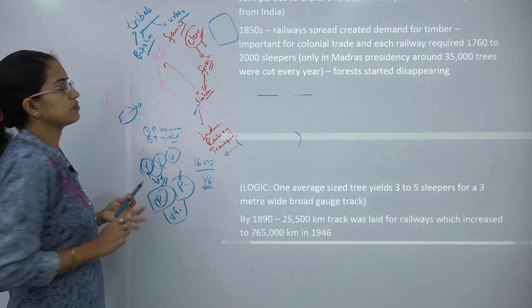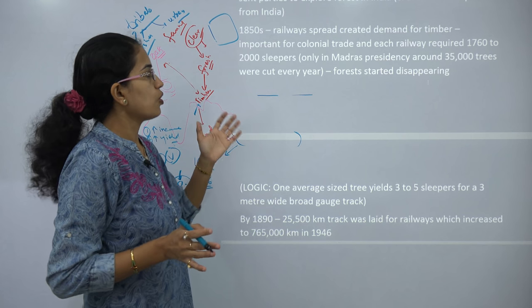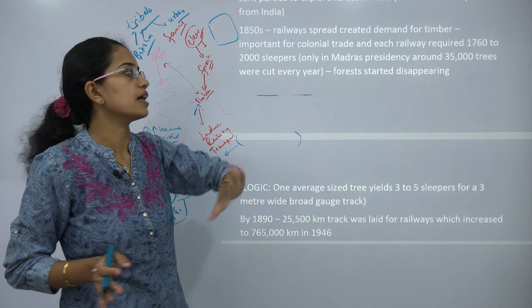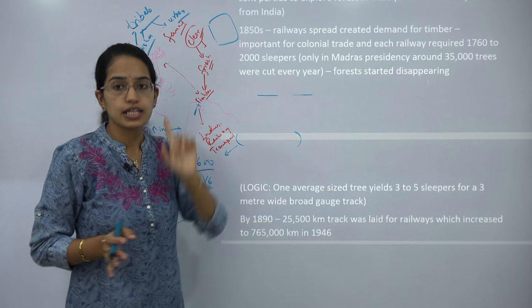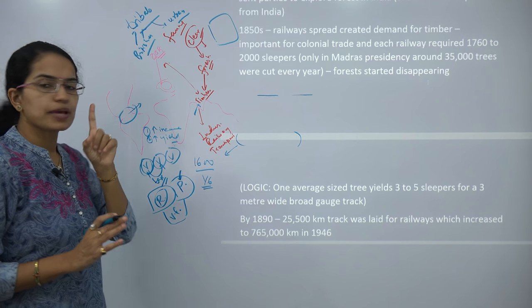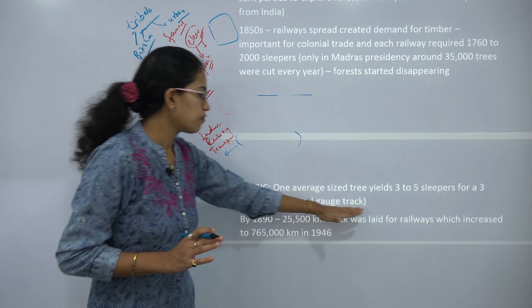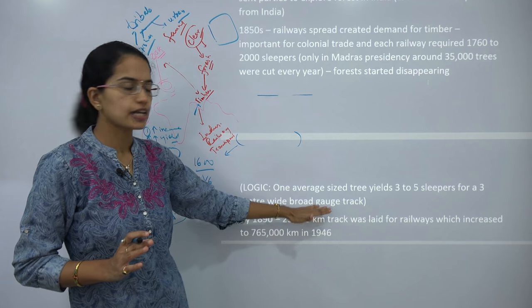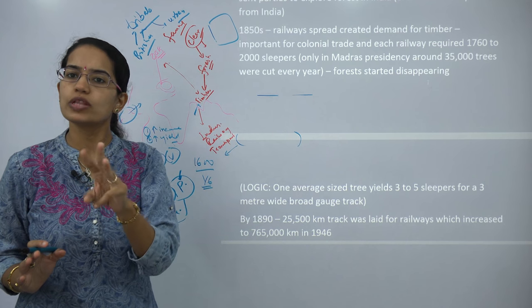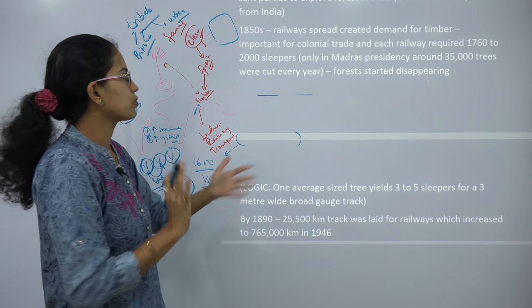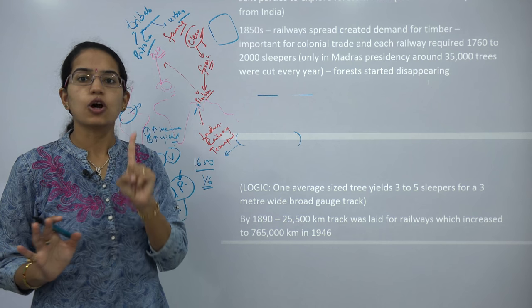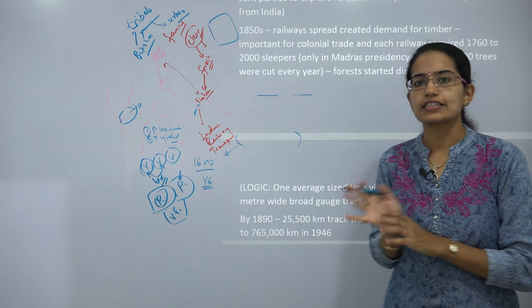When we talk about the expansion of railways, railways themselves required lots of timber. In Madras Presidency alone, nearly 35,000 trees were cut yearly. To prepare one railway sleeper, one average-size tree yields only three to five sleepers. For one whole railway line, you require around 2,000 sleepers. That means around 400 trees would be cut for one railway line being developed. So there was ample cutting of forest not only in India but in other parts of Southeast Asia as well.